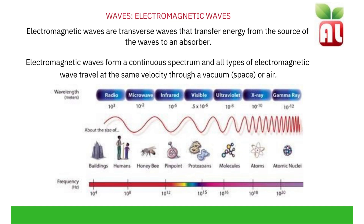Electromagnetic waves are transverse waves that transfer energy from the source of the waves to an absorber. Electromagnetic waves form a continuous spectrum, and all types of electromagnetic wave travel at the same velocity through a vacuum or air. The longest wavelength electromagnetic wave is the radio wave, decreasing in wavelength through microwave, infrared waves, visible light waves, ultraviolet light waves, X-rays, and finally gamma rays which have the shortest wavelength and therefore the highest frequency.